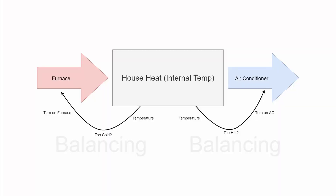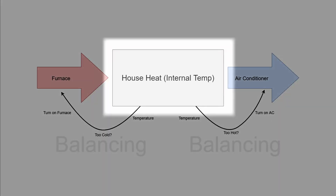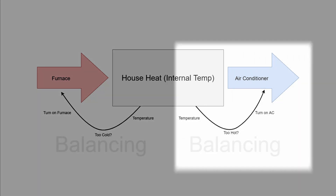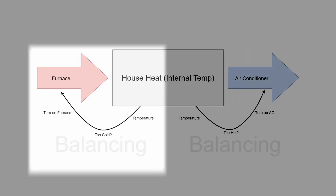Let's take a look at some real examples. We'll start by looking at the behavior of systems with one stock and two balancing loops. An example we'll use is a house with a thermostat — one we've used previously. The stock is the heat in the house represented by internal temperature, and the two balancing loops are the systems that kick in when the temperature gets too hot or cold.